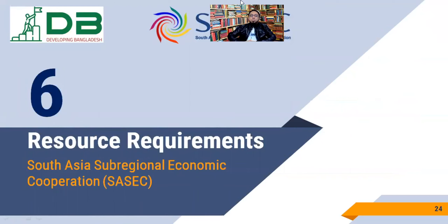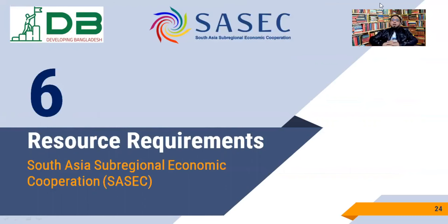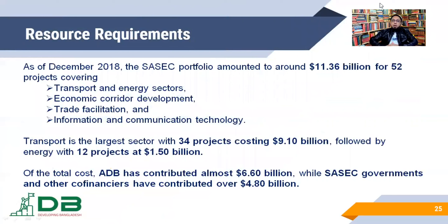So till now we saw the objectives of SASEC countries. Now we would like to discuss the resource requirement — how much resource will be required. According to one latest projection, about $120 billion will be required for implementing all the proposed projects of SASEC countries. But till December 2018, SASEC member countries had already implemented $11.36 billion for 52 projects.